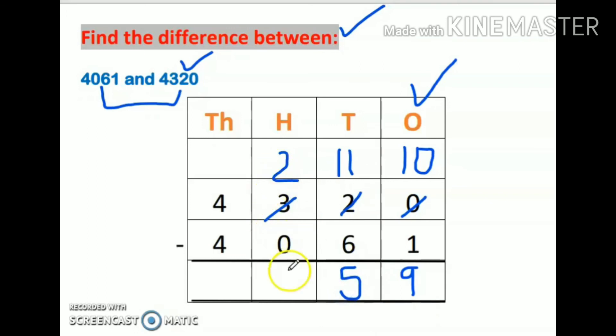2 minus 0 is 2, and 4 minus 4 is 0. So my answer is 259. I hope you have understood subtraction. Bye bye.